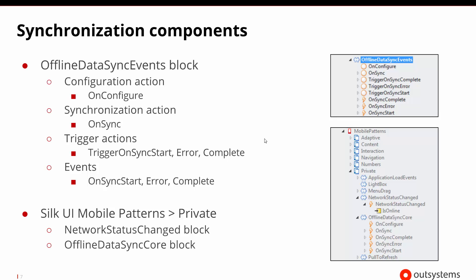Along with those actions, there's also a block in the common UI elements called the offline data sync events block. It has events incorporated into it — it knows when a synchronization has started, when a synchronization has completed, and when there might be an error. It has the capability to trigger all of those events and can also trigger a synchronization or a configuration. This block would be very useful in different types of pages if we want to react to different steps in the synchronization process.